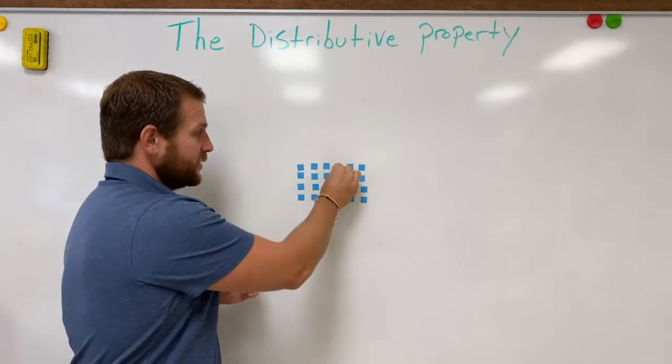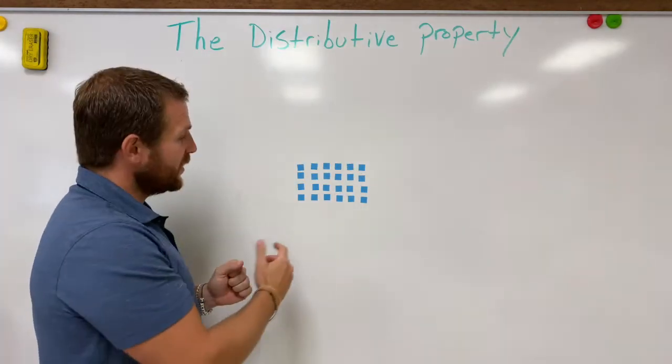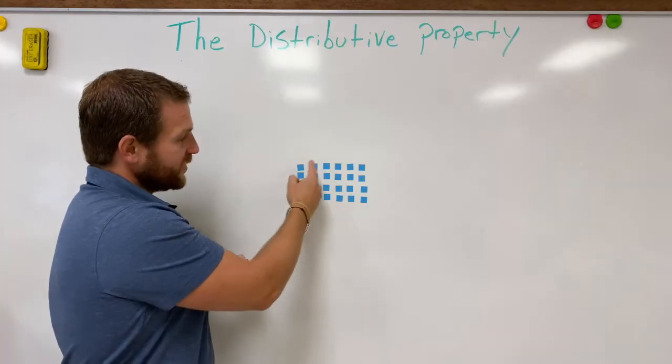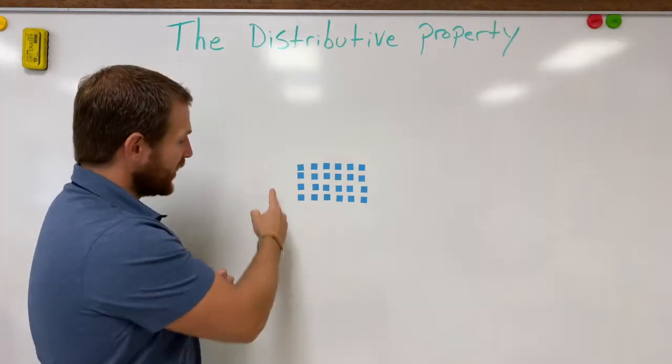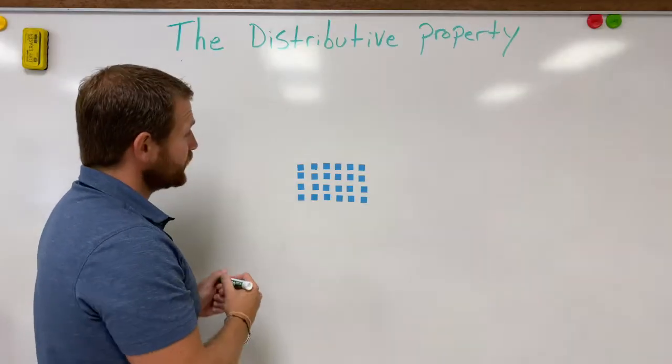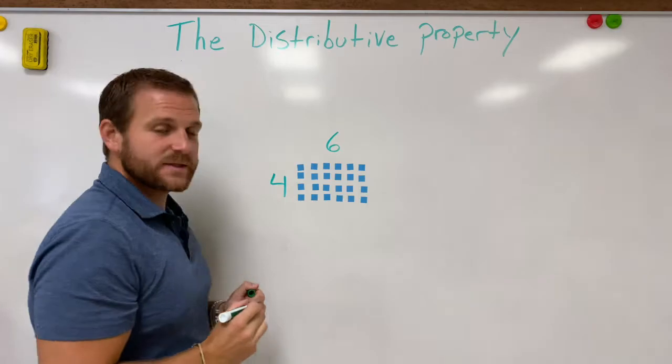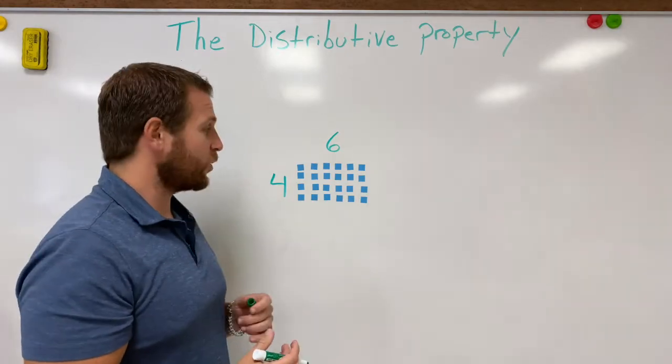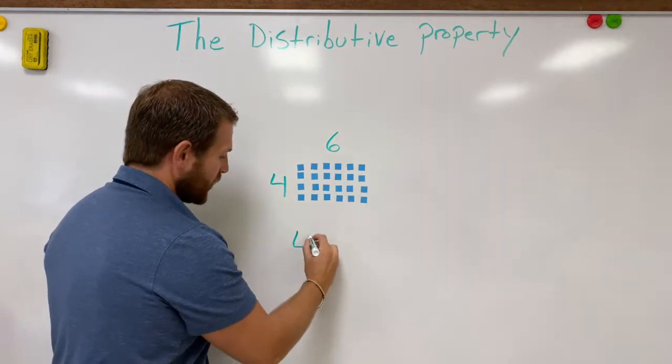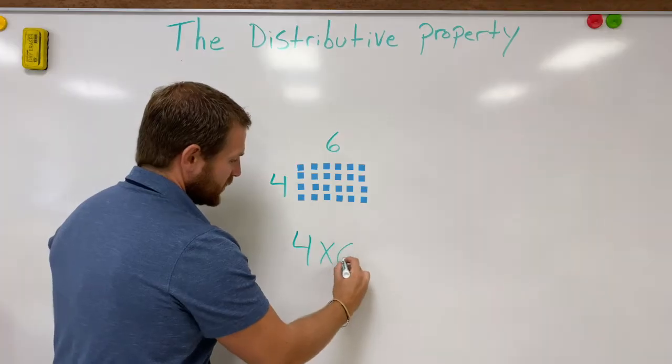So this right here is an array set up of four rows with six in each row. So we have four going down and six across. So it's a four by six. Now traditionally we would write this equation out as four times six.